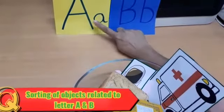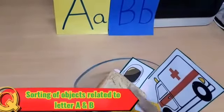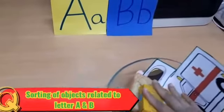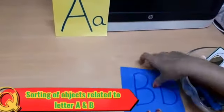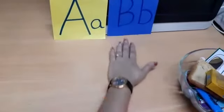We have objects related to letter A and letter B in this big board. Now we have to keep according to the letter which it belongs to. So let's do it.